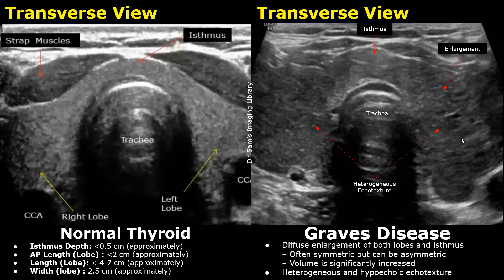There is diffuse enlargement of the thyroid, which means all three parts of the gland are enlarged — the right lobe, left lobe, and the isthmus are all enlarged. The echo texture is heterogeneous and also hypoechoic. You can see the difference in the echo texture by comparing it with a normal thyroid.